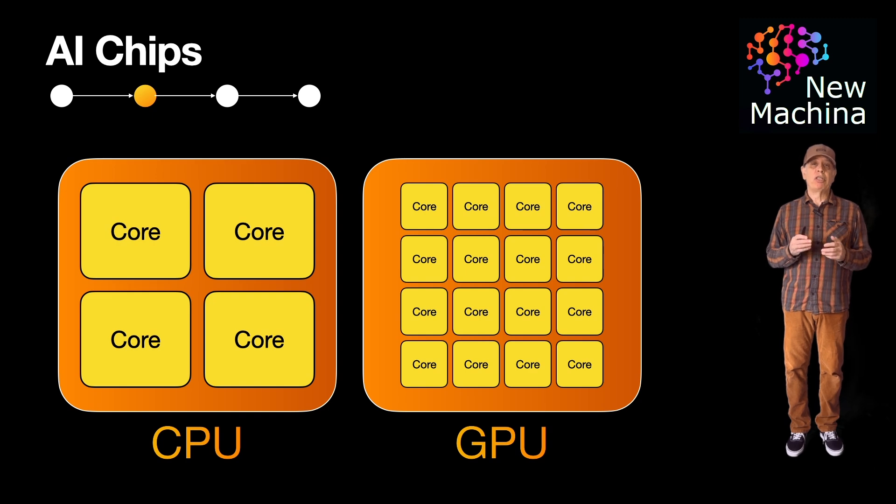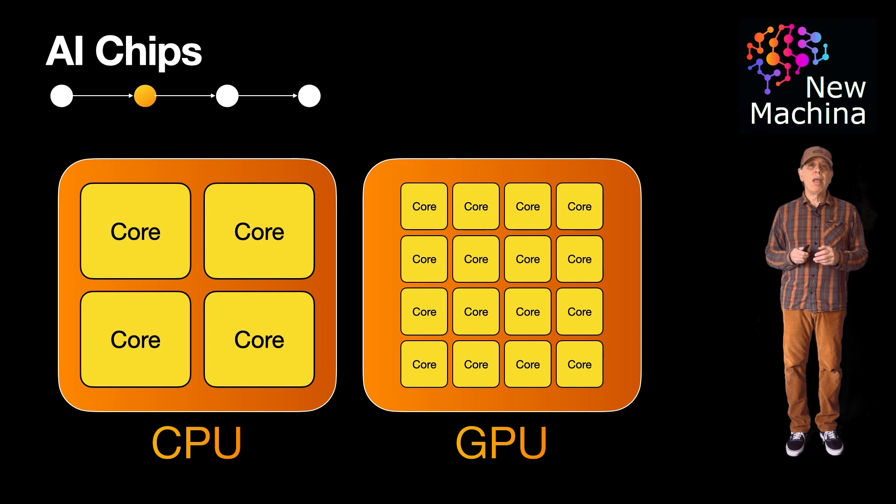Examples are matrix to matrix or matrix to vector multiplication. Simply put, GPUs trade flexibility in the logic they can handle for raw parallel speed, while CPUs prioritize versatility and complex task handling.